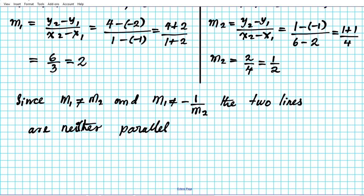Since the slope of line one is not equal to the slope of line two, and the slope of line one is not equal to the negative reciprocal of the slope of line two, the two lines are neither parallel nor perpendicular.